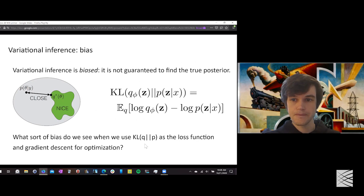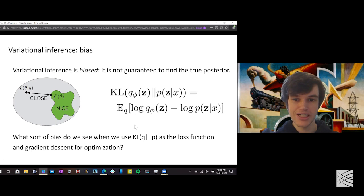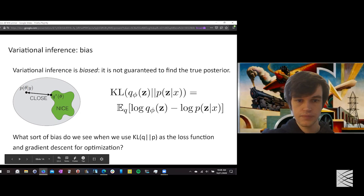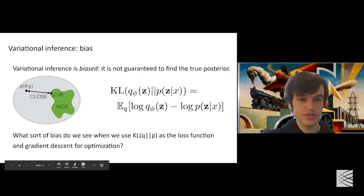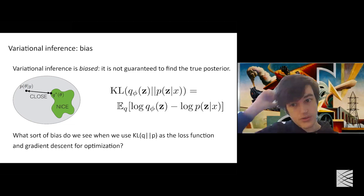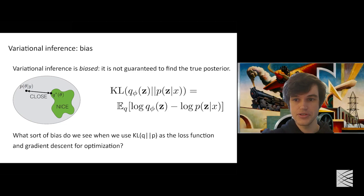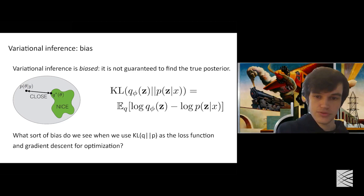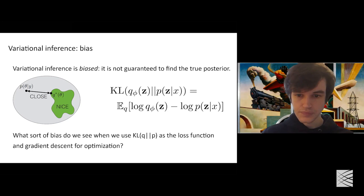If you've come across variational inference before, you may have heard that it's fast and scalable but also biased — it's not guaranteed to find the true posterior. Because as we can see in our conceptual figure, the green blob might not overlap with the true posterior distribution. But it turns out that even though this notion of bias can seem scary in the abstract, it's surprisingly easy to predict and even mitigate with a bit of intuition.